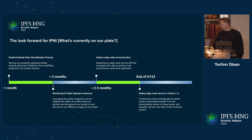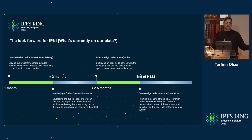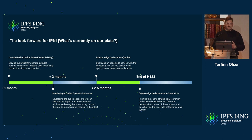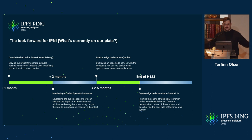Additionally, we're working on an edge node service. Masi mentioned the caching problem — the idea that the closer we can get a reflection of this index, this key-value store we present for lookups, the faster those lookups might be. We have the Saturn network, a very broad and deep CDN. We have the opportunity to deploy an edge node service to that network and take advantage of this highly distributed network to get lookups as close as possible and reduce network traffic.